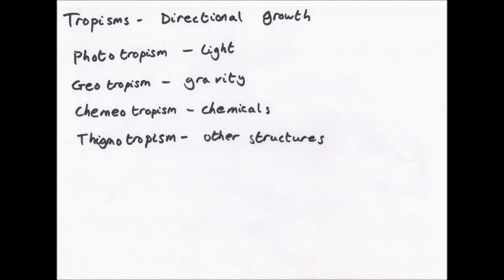A tropism is directional growth — an external stimulus causes the plant to grow in a certain direction. There are four types. Phototropism is when shoots grow towards light. Geotropism is when roots grow towards the pull of gravity. Chemiotropism is when they respond to chemicals. And thigmotropism is where shoots of climbing plants, like ivy, wrap around and grow towards something.